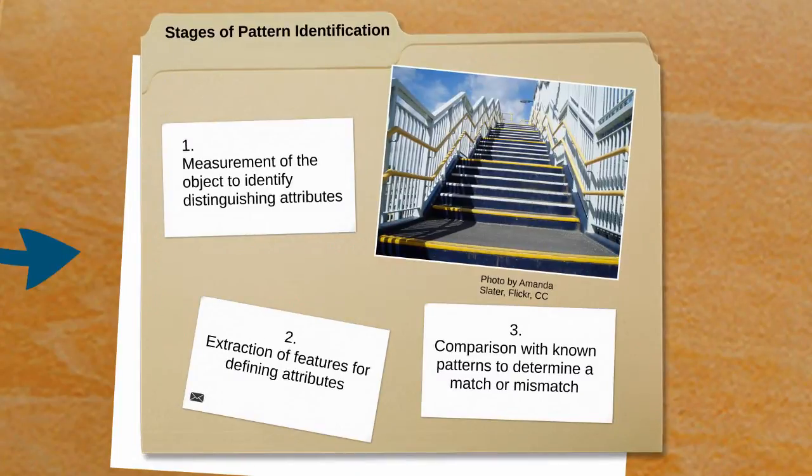There are particular stages of pattern identification. We might look at the pattern and distinguish a particular set of attributes such as color, size, length and then we extract the features. Lastly, we compare patterns to determine a match or a mismatch.